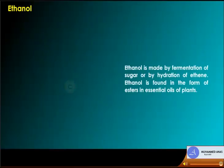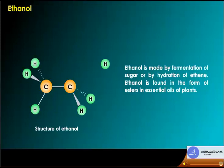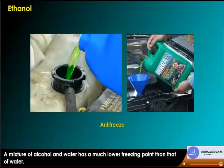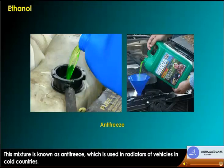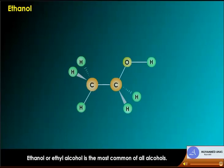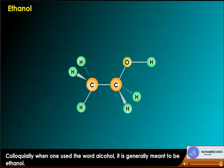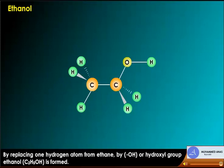Ethanol is made by fermentation of sugar or by hydration of ethene. It is found in the form of esters in essential oils of plants. A mixture of alcohol and water has a much lower freezing point than water; this mixture is known as antifreeze, used in radiators of vehicles in cold countries. Ethanol or ethyl alcohol is the most common of all alcohols. By replacing one hydrogen atom from ethane with an OH group, ethanol C2H5OH is formed.